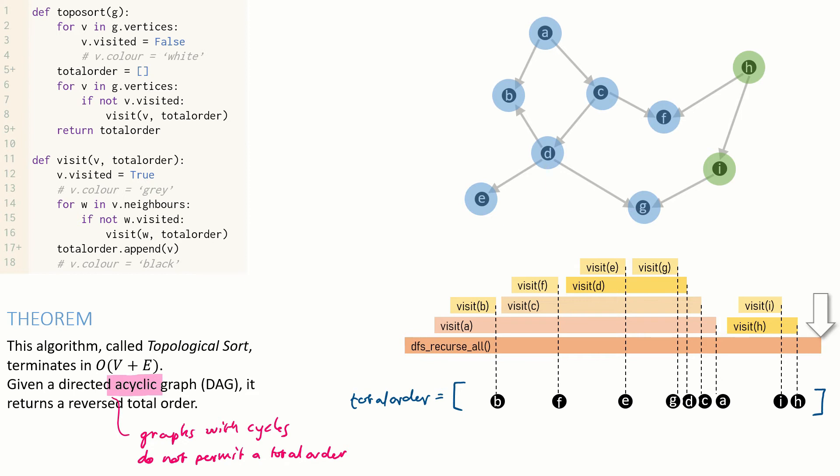If we run this algorithm on a directed acyclic graph, or DAG, then it returns a proper, correct reverse total order. We saw earlier that there's no point running this algorithm on a graph with cycles, because if there are cycles then it's impossible to put all the vertices into a total order. This theorem says that for every graph that doesn't have cycles, then a total order exists, and furthermore that this algorithm finds it.